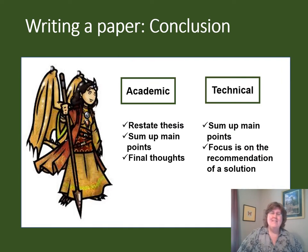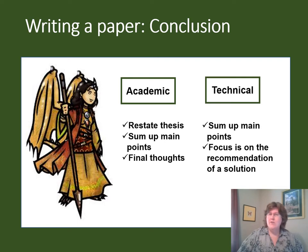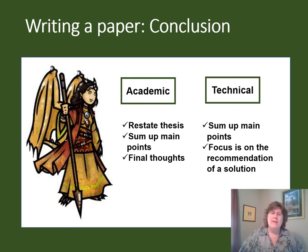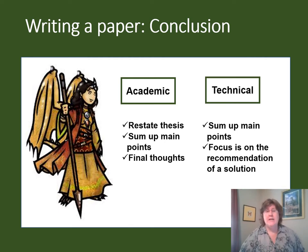Lastly is the conclusion, which is quite different between academic and technical writing. The academic writer will restate their thesis, sum up their main points, and leave the reader with a final thought. However, the technical writer will still sum up main points, but their focus — instead of restating a thesis and wrapping up an argument — is making a recommendation to take action for the solution to the problem they are solving. So the technical writing conclusion is focused on the behavior they are wanting to implement.